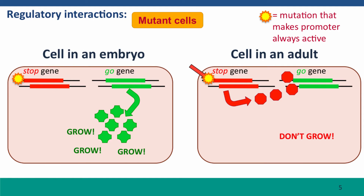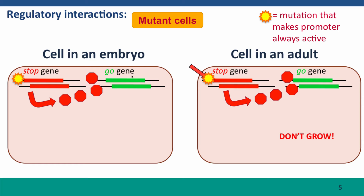Now consider a different kind of mutation — a mutation in the DNA sequence of the promoter for a gene that makes that promoter always active. These are not uncommon mutations in our cells. What's going to be the phenotype of a mutation that makes the stop gene always active? Well, in an embryo, the stop gene is going to produce stop protein, which is going to act on the go gene. And probably this will be enough stop protein to prevent synthesis of the go protein. So this embryonic cell is not going to grow as it should.